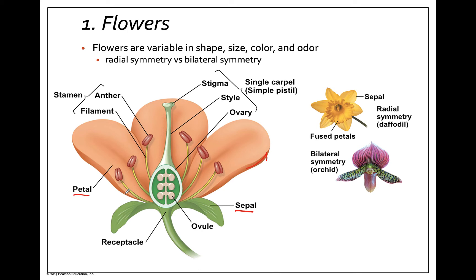Then we have the petals. The petals are usually brightly colored and are going to help attract pollinators to the flower. Then we have the male reproductive sporophyll — the microsporophyll. It's made up of two parts: the anther, which is where the actual microspores are, and the filament, which is a kind of staff to help hold it up. Together, both of these are called the stamen.